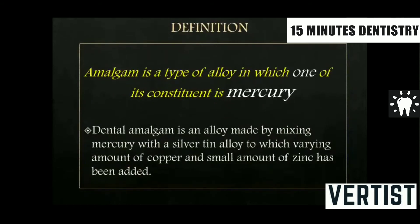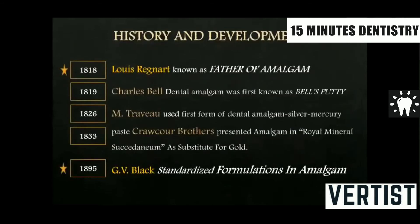Now, what is this amalgam? Amalgam as such is nothing but any alloy which is mixed with mercury — it is called an amalgam. Dental amalgam is an alloy made by mixing mercury with silver-tin alloy, to which varying amounts of copper and small amounts of zinc have been added.